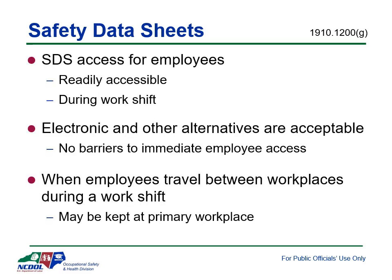The employer is required to maintain copies of the required safety data sheets for each hazardous chemical and must ensure they are readily accessible to each employee during each work shift. Electronic access and other alternatives to maintaining paper copies are permitted as long as there are no barriers to immediate employee access. In the event of a systems failure with an electronic system, a backup system must be in place — for instance, if Internet access is unavailable due to high volume or loss of power, the employer must have another means for receiving the required information quickly.